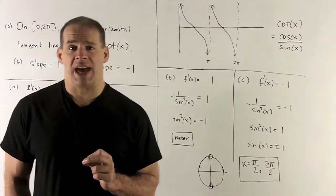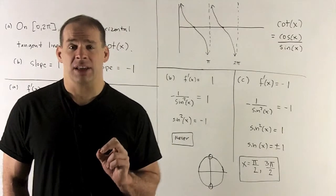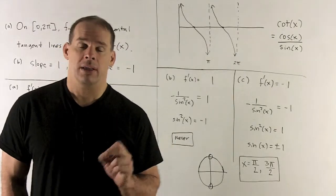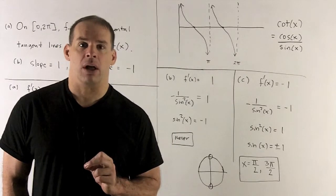And then, if I take the square root of both sides, we're going to get sine of x equal to plus or minus 1. Remember, we have to throw in the solution with a negative number also.